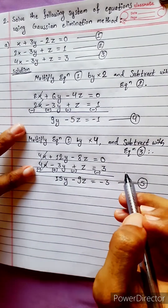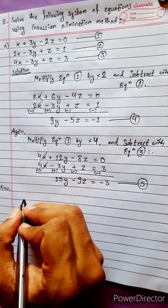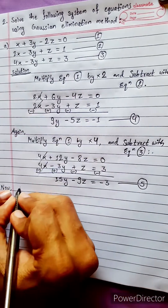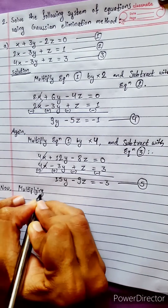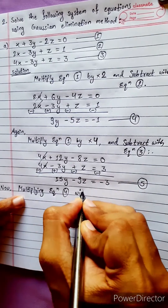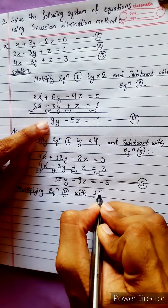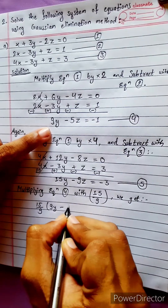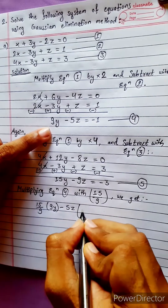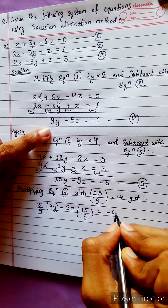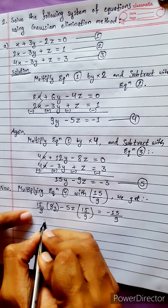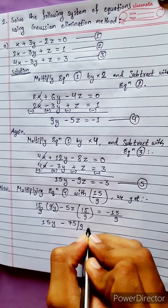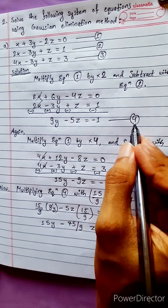Now we have to solve these two equations 4 and 5. We need to make the same coefficient — either 15 or 9. Multiplying equation 4 by 15/9: the 9s cancel, giving us 15y - (75/9)z = -15/9. This is our new equation 4.